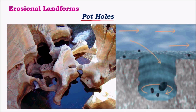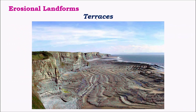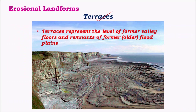The next major landform is potholes. Potholes are mainly formed when a small crack or cylindrical hole in the riverbed undergoes intense erosion due to the swirling motion of water and rocks, which cuts large cylindrical-shaped holes into the riverbed, as visible in the figure.